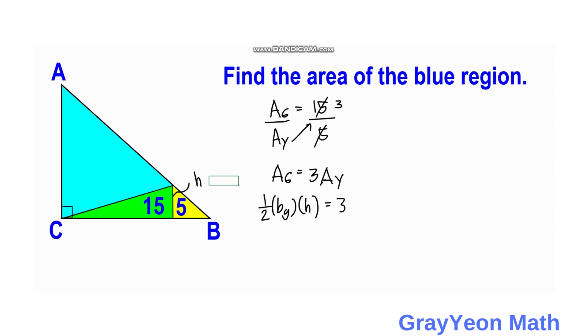And for the yellow we have area 3 times area times one-half times the base of the yellow times the height. And since they have a common height we cancel this, cancel this one-half.